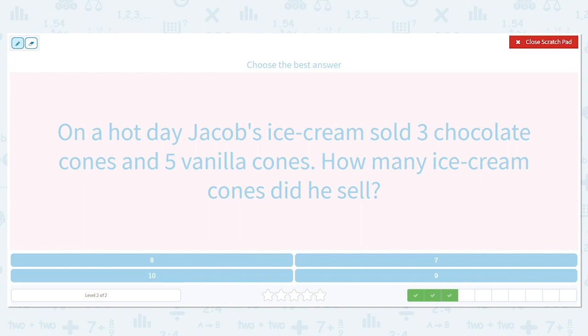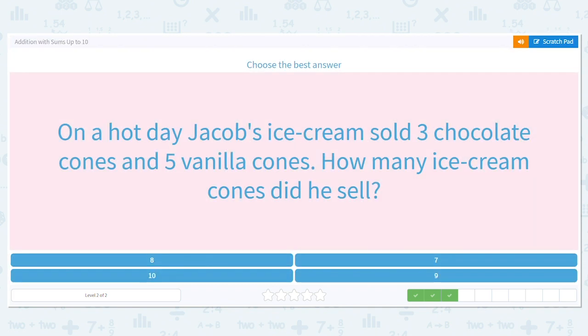Okay, so we want to know the total number. We want to know how many were sold on a day. He had three chocolate and five vanilla. What is my addition sentence going to be? What plus what? Three plus five, which equals how many? Count on from five. Three more. Five, six, seven, eight. So he sold eight ice cream cones.